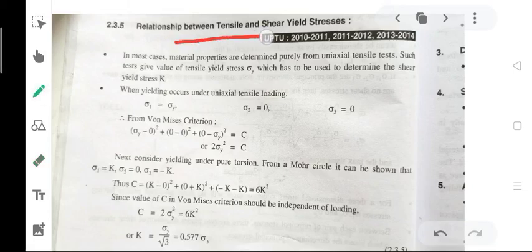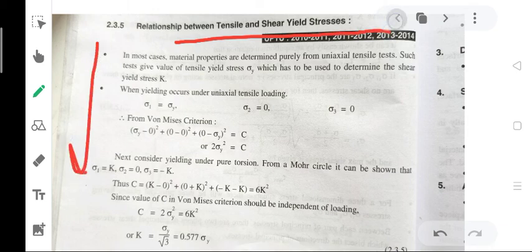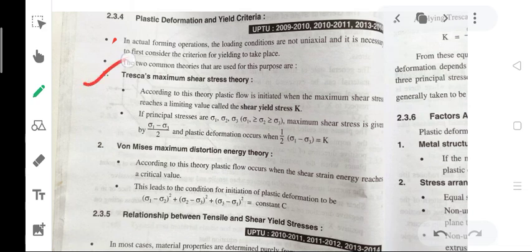Relationship between tensile and shear yield stress: we have seen two important theories, Tresca's yield criteria and Von Mises' yield criteria. For principal stresses sigma_1, sigma_2, and sigma_3, maximum shear stress is given by (sigma_1 - sigma_3)/2, and plastic deformation occurs when this reaches a critical value.